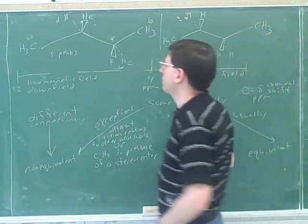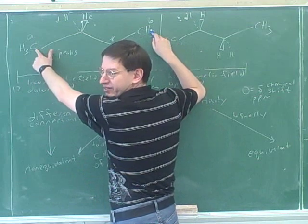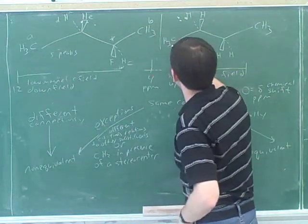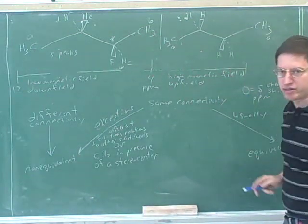That would have a couple of results. First of all, that would mean that these two sides were equivalent, right? Right. So now we would give the letter A to both the right and the left-hand carbons.